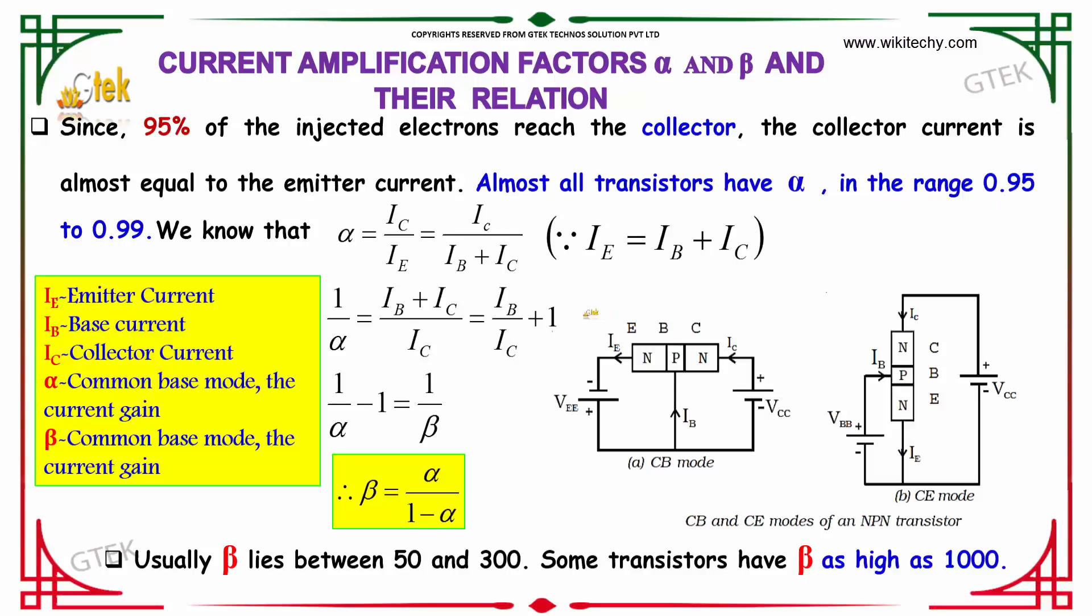So alpha equals i-collector divided by i-emitter. As you know, i-emitter equals i-base plus i-collector.